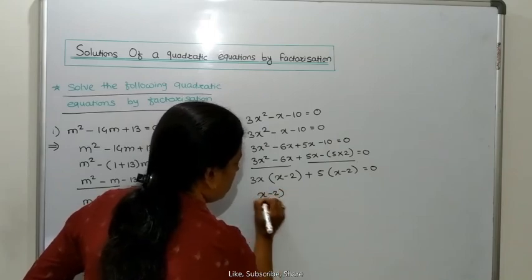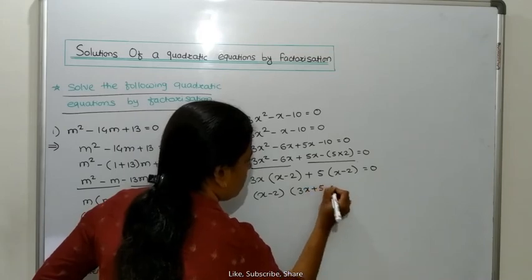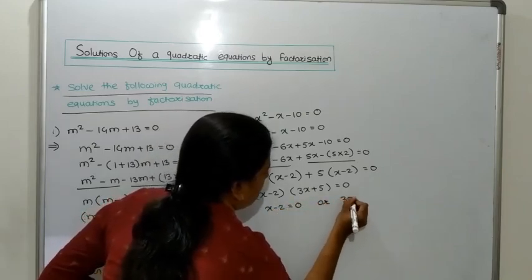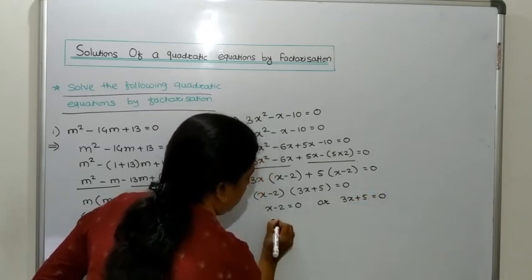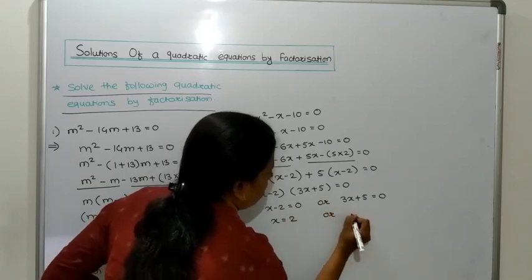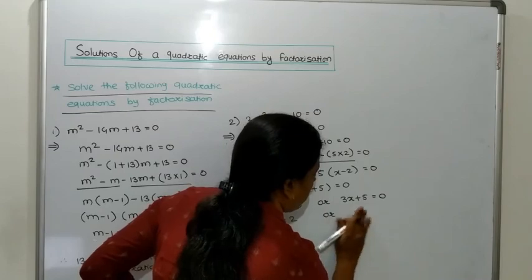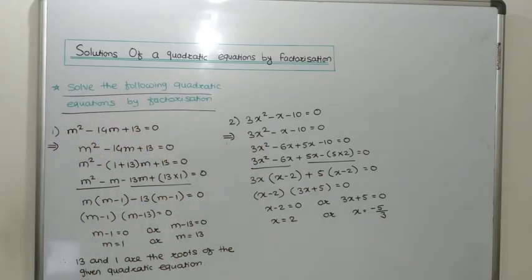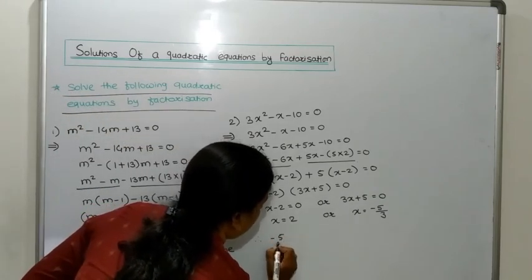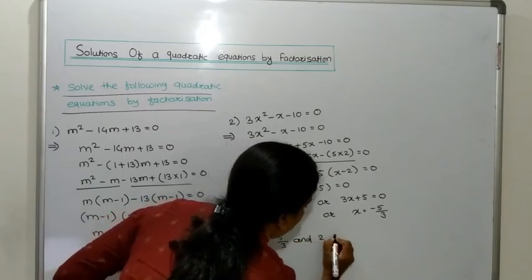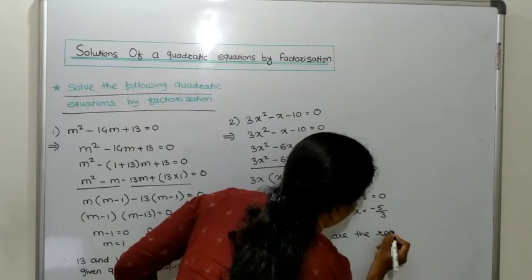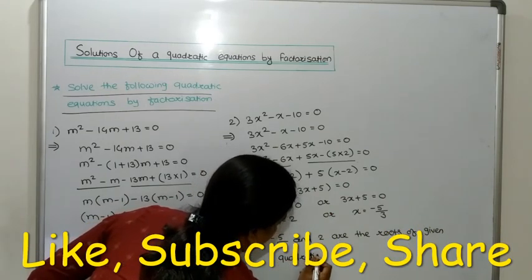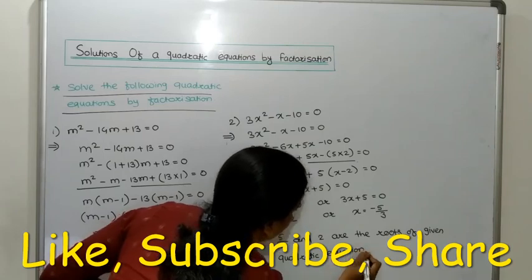So x minus 2 is in one bracket and 3x plus 5 is in another bracket. Next: x minus 2 equals 0, or 3x plus 5 equals 0. Therefore x is equal to 2, or x is equal to minus 5 upon 3. So minus 5 upon 3 and 2 are the roots of the given quadratic equation.